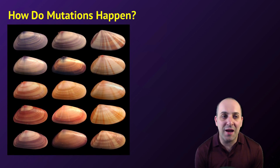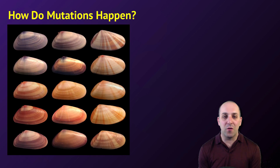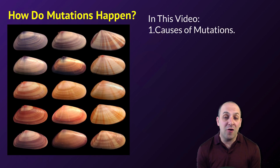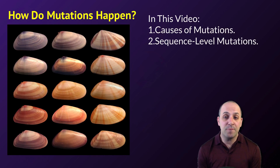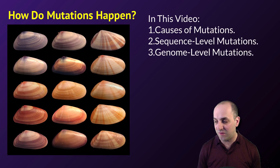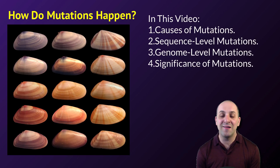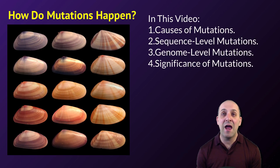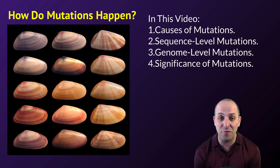The question we're really going to try to answer here is how do mutations happen? We're going to look at the causes of mutations, the effects of sequence-level mutations at the DNA level, and the effects of genome-level mutations involving larger pieces of DNA, before we discuss the significance of mutations — both in terms of disease and in terms of generating the variety necessary for evolution.